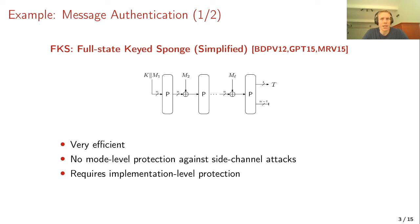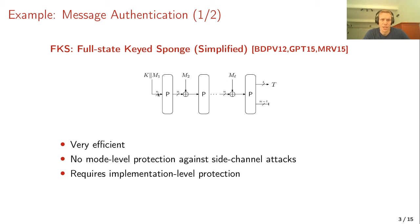FKS is an extremely efficient scheme — you compress n bits at a time where n is the size of the permutation. On the downside, it gets no mode-level protection against side channel attacks, so you need implementation-level protection for the permutation P. Notably, there are many secret states in this evaluation: the state is initialized with the key, and if the attacker learns any intermediate state it can track back and obtain the key.